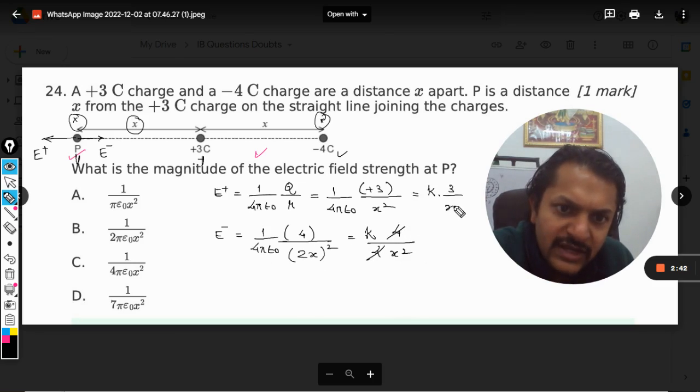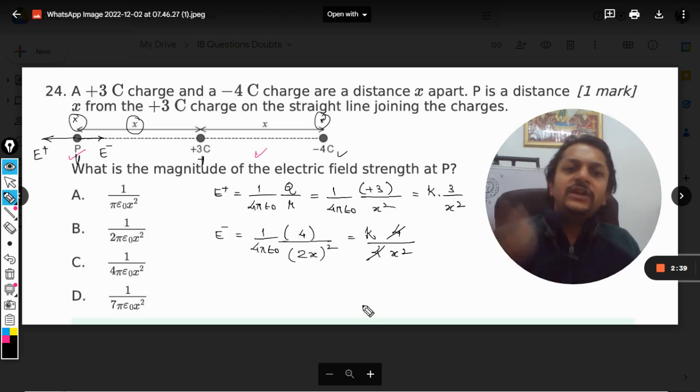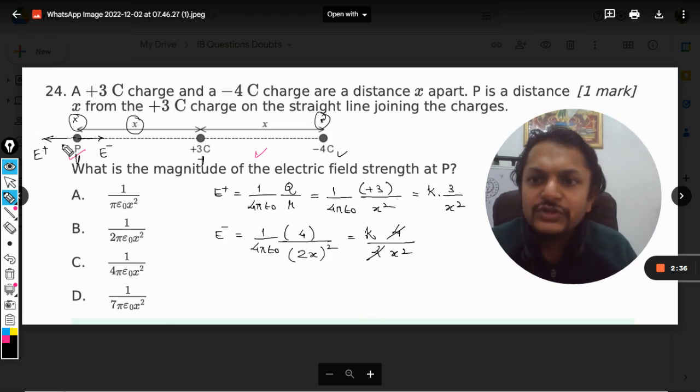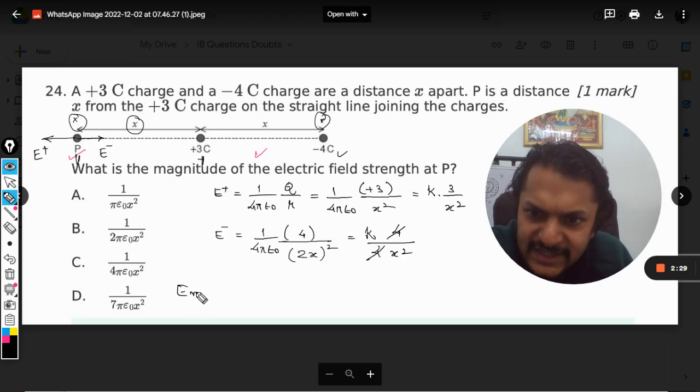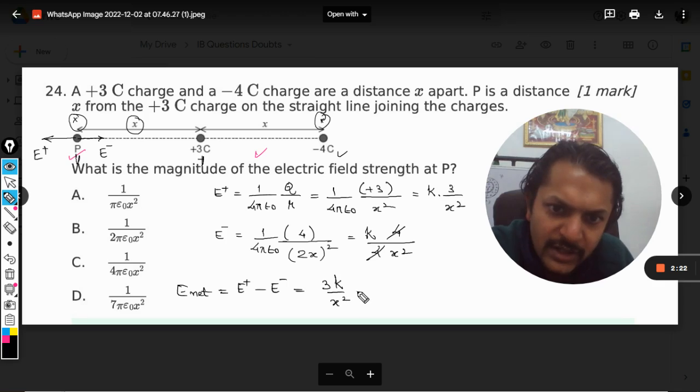There are two forces acting opposite to each other, so we can supply a negative sign. E_net will be E_positive minus E_negative, which is 3k/x² minus k/x², giving us 2k/x².